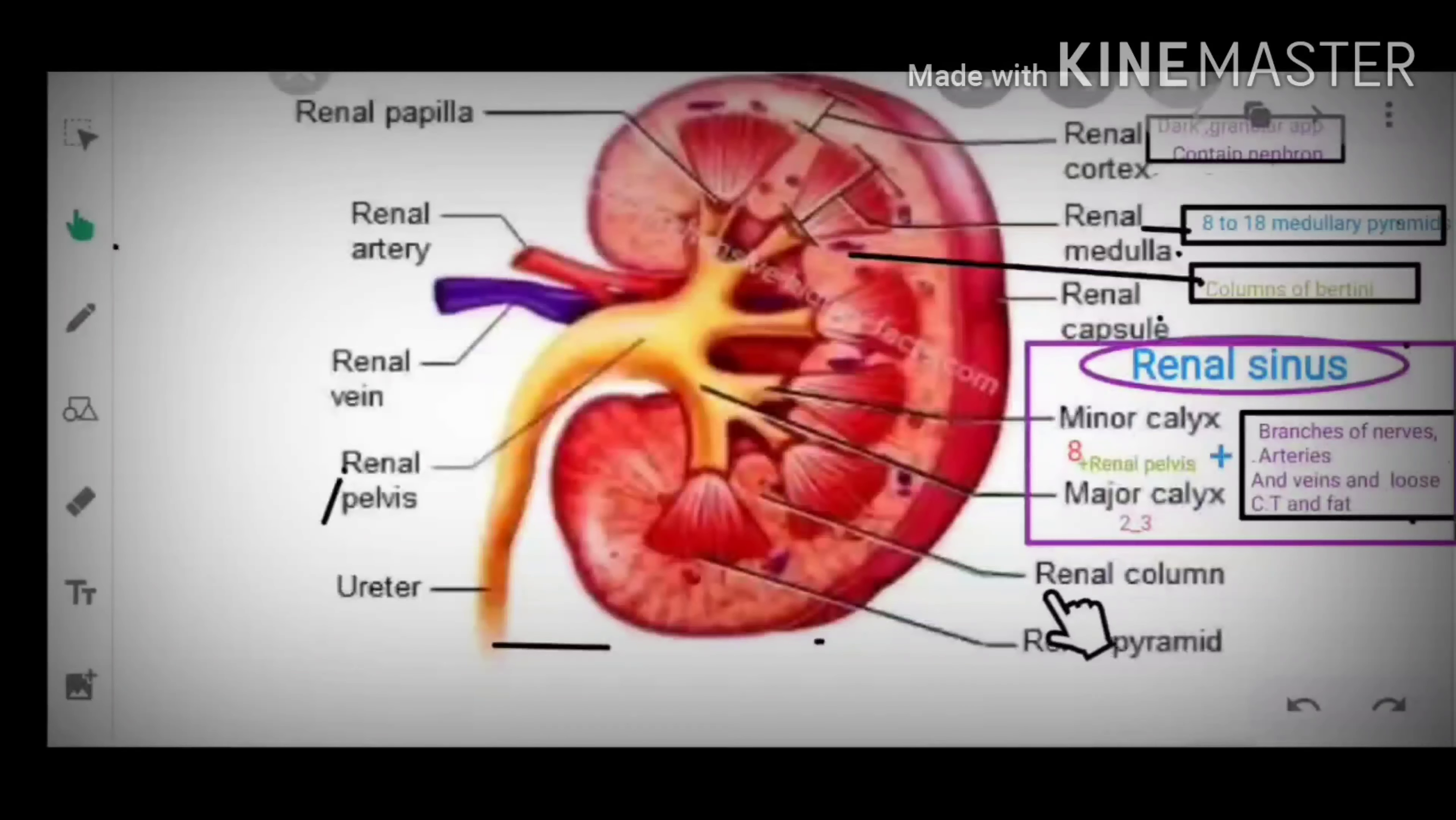Other parts of kidney are renal column, renal pyramid, renal papilla, renal artery, renal vein, renal pelvis and ureter.